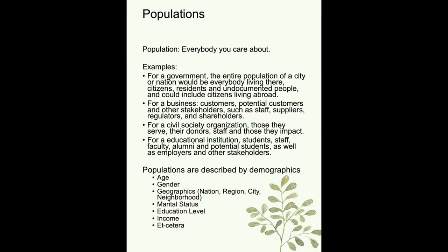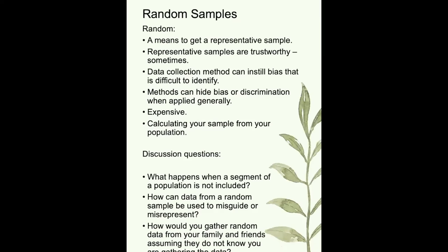Now that you understand what a population is, let's talk about random sampling. Random sampling means you get a sample — those are the people you survey within your population — and the data you get actually represents your population. What's great about random samples is that they're trustworthy, meaning policymakers and others can make decisions based on them, though there's a lot happening in the world around methods of gathering data.